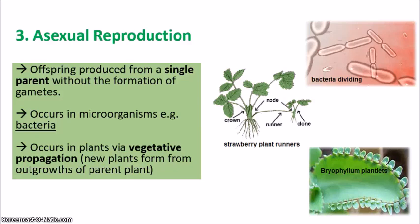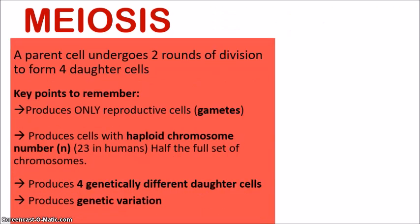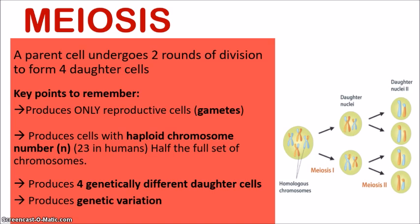Now let's look at meiosis. Meiosis is a cell division in which one parent cell undergoes two rounds of division to form four daughter cells at the end. The first key point: meiosis produces only reproductive cells — it produces sex cells, also known as gametes. These are the egg and the sperm, and that is the only time meiosis occurs — to produce these reproductive cells.